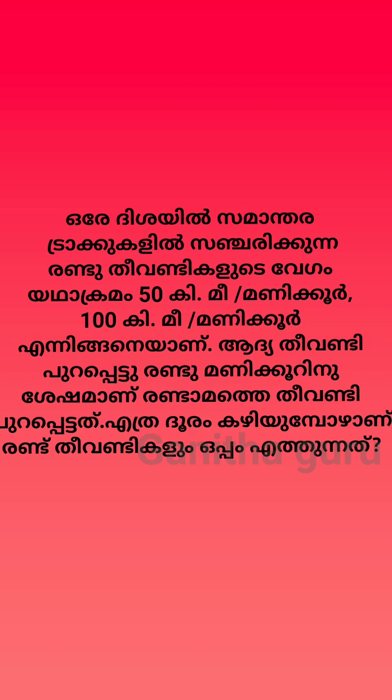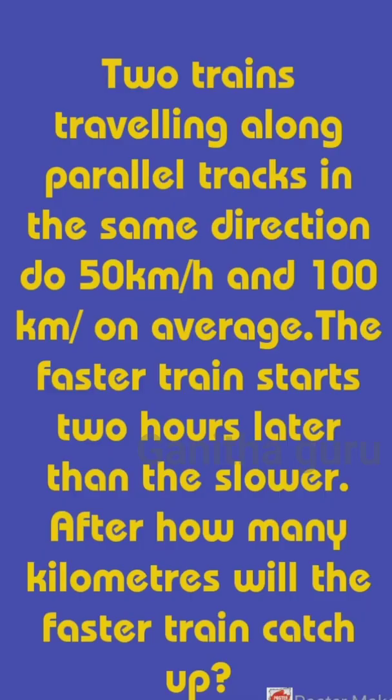Two trains travelling along parallel tracks in the same direction at 50 km per hour and 100 km per hour on average. The faster train starts two hours later than the slower. After how many km will the faster train catch up?